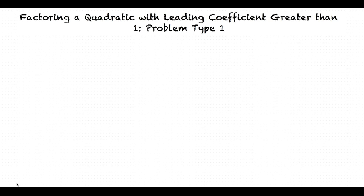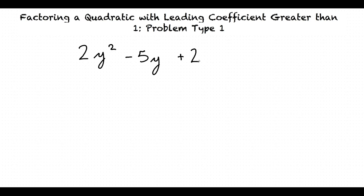Here's an example video for the topic: factoring a quadratic with leading coefficient greater than 1, problem type 1. The example problem we will look at is 2y squared minus 5y plus 2.